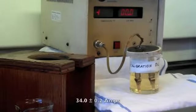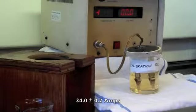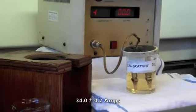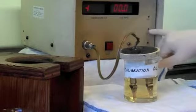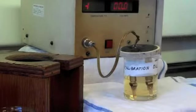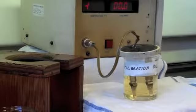For the calibration oil, the value that we are expecting is 34 plus minus 0.2 amps. If that's not the case, the apparatus has a calibration knob here that can be adjusted and the test is repeated again until the value falls within the spec.